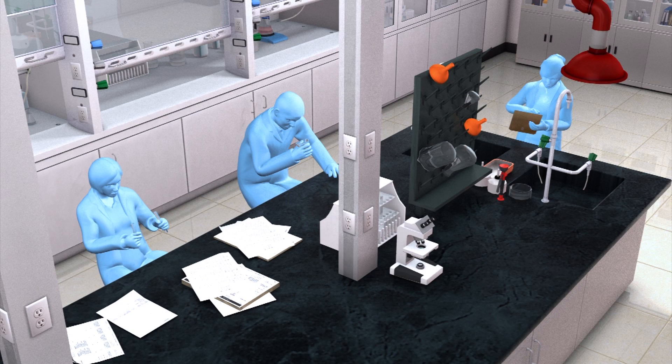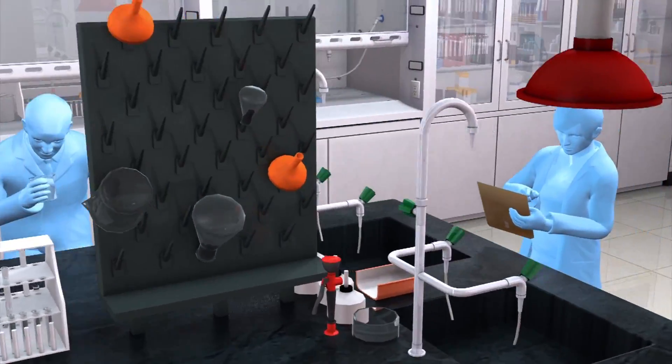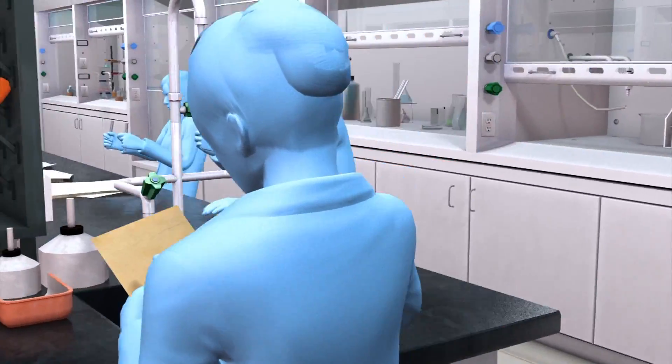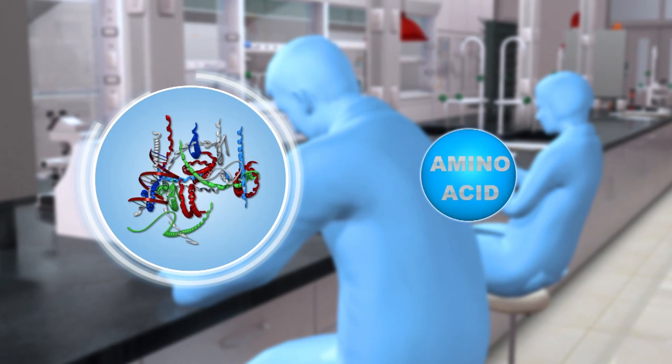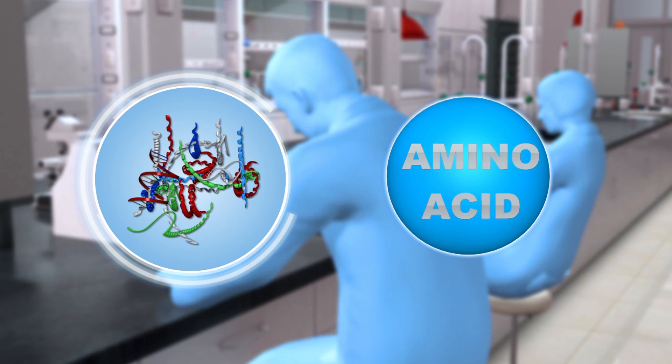Scientists made the discovery while looking at the structure of a natural plastic-eating enzyme believed to have evolved in a recycling plant in Japan. Researchers added some amino acids to the enzyme, which ended up speeding up its plastic-eating capabilities.